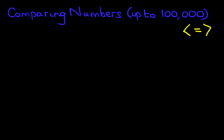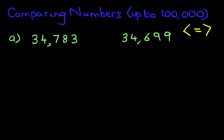Let's have a look at our first example. Suppose we have these two numbers. We've got two sets of numbers. The first thing you have to check is how many digits they have. We're going to label them. We've got units, tens, hundreds, thousands, and ten thousands.